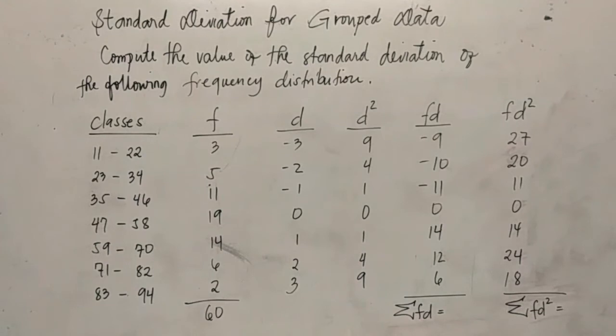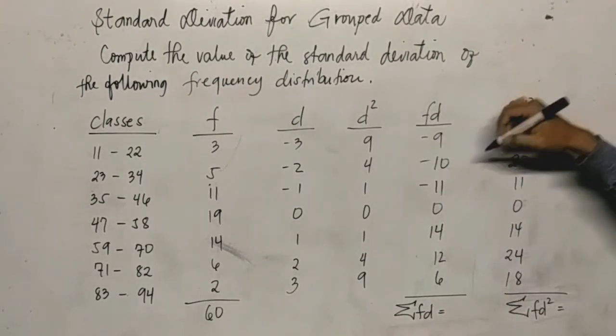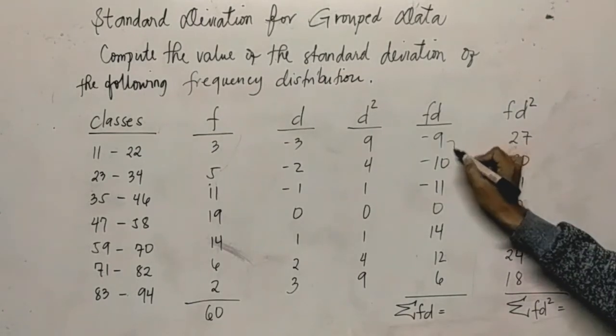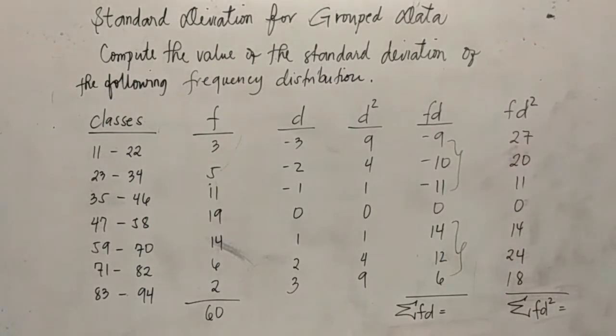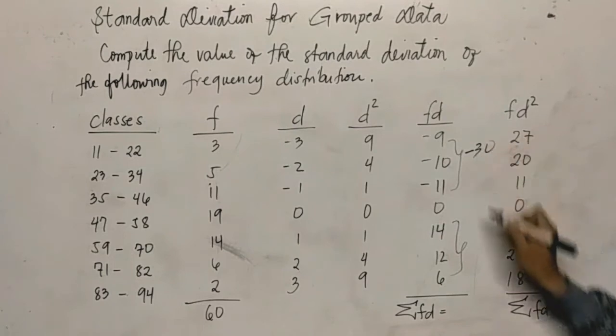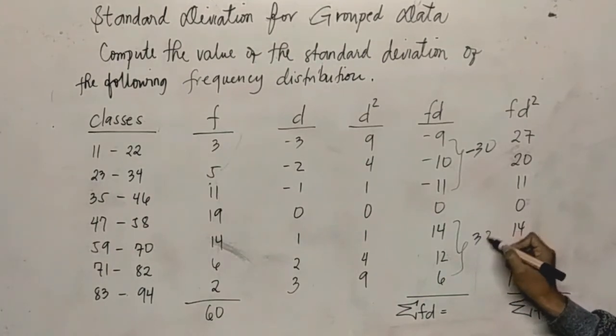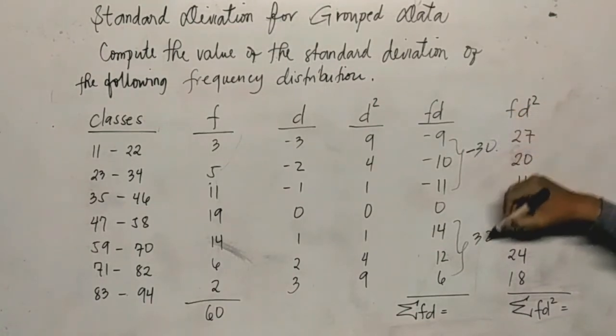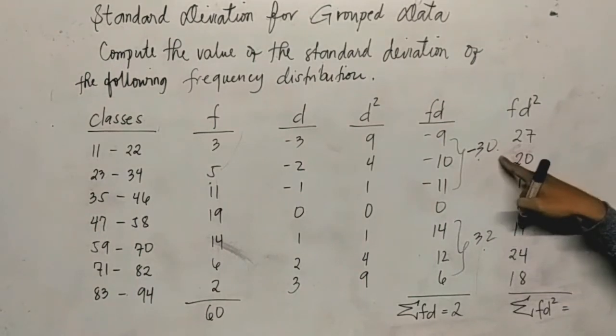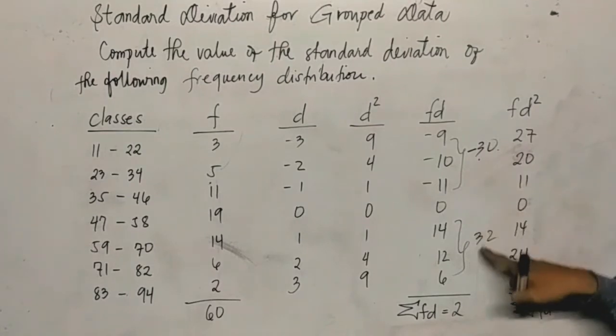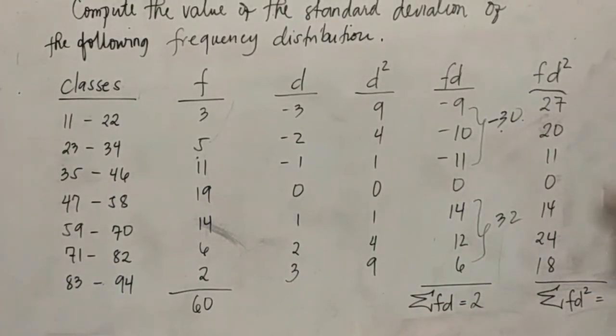Since we got that, we'll add them up. Because it's summation. So let's get the summation of fd. We can also get the summation of fd squared. To get summation of fd, we add all the fd values, the negative and positive. To avoid confusion, we can add the negatives separately: negative 9 plus negative 10 plus negative 11 equals negative 30. Then the positives: 14 plus 12 plus 6 equals 32. So negative 30 plus 32, since it's negative, we subtract: 32 minus 30. The answer is 2, taking the sign of the larger number, so positive 2.